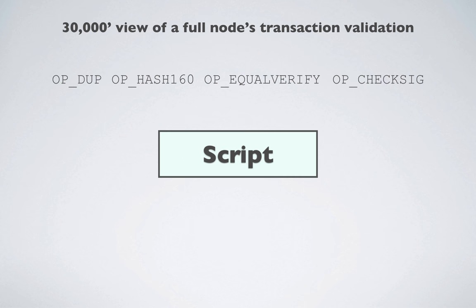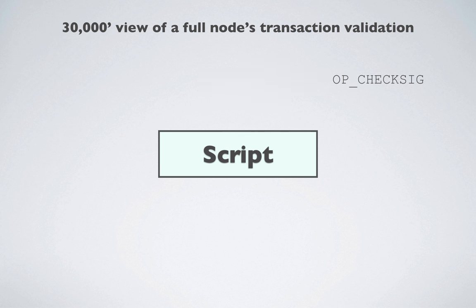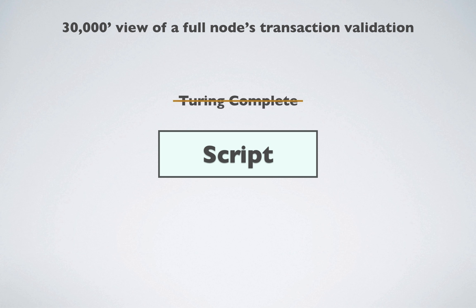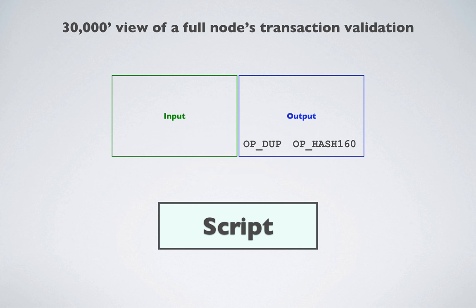A node contains a stack-based scripting system capable of processing commands from left to right, called Script. Script was designed not to be Turing-complete, meaning, among other things, you can't have loops. Commands contained within a transaction are processed by Script to do the validation.